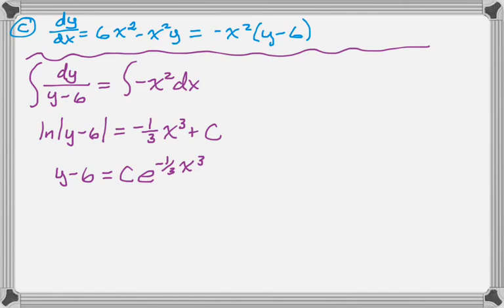So y-6 equals c·e^(-1/3 x³). If you're confused about that, I'm pretty sure there are some other videos I've made where we go through that process. I know f(-1) is 2, so I plug that in, solve for c. So c is -4e^(-1/3).